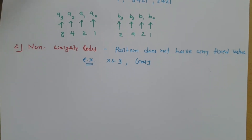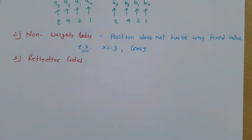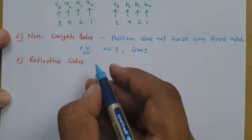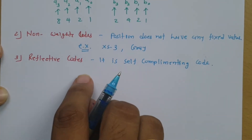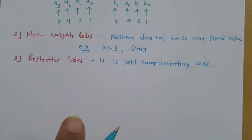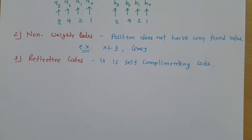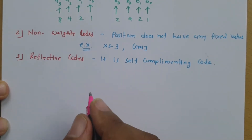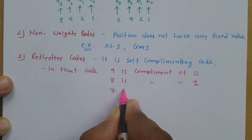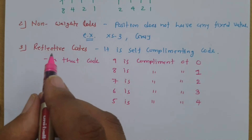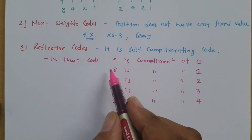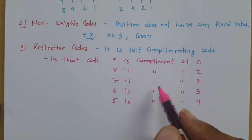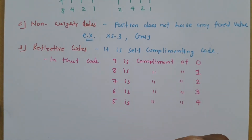The third category is reflective code. A reflective code is a self-complementing code. In a self-complementing code, 9 is the complement of 0, 8 is the complement of 1, and 7 is the complement of 2, and so on.